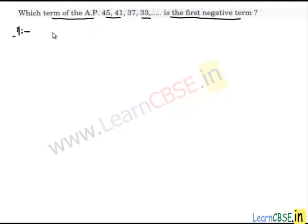Here we have the AP 45, 41, 37, 33, and so on. The AP is in decreasing order, so we have to find which term is the first negative term. Let's work out the problem.